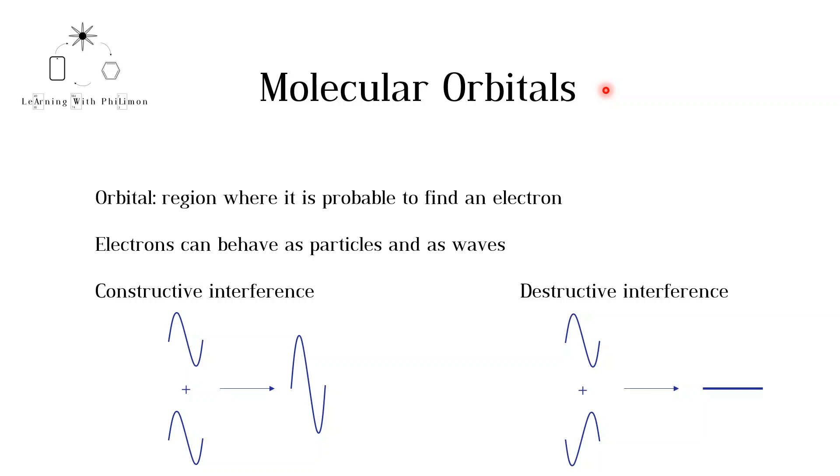In the orbitals video, we discussed that orbitals can be described by a mathematical wave function that gives the probability of finding an electron in a particular point in space.